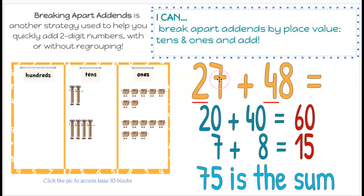Well then we also have our ones. So if we decompose our numbers by place value, 27 in expanded form would be 20 plus 7, and 48 would be 40 plus 8. So we could say 20 plus 40 is 60, and 7 plus 8 is 15. And we come up with the sum of 75.